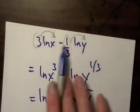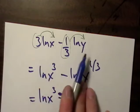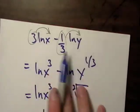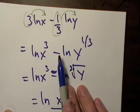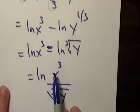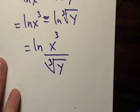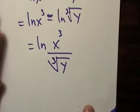This time, we started out with two logs, and we used the power rule. We stuck the powers back up on top of the variables. Then we used the quotient rule backwards again, and we came up with a single log. So that's pretty cool. Let's try it again.